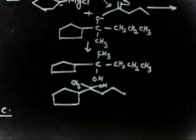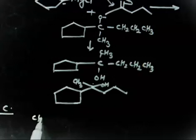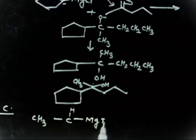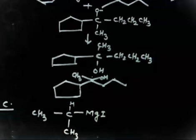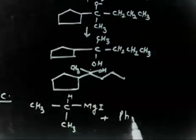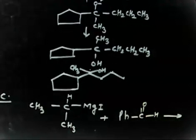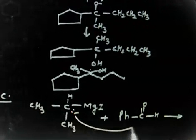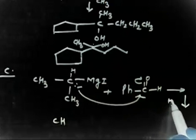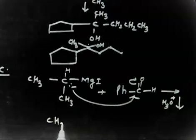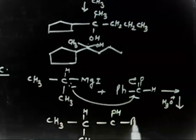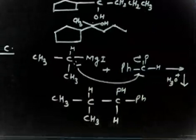Part C is again easy — these are Grignard reagent reactions. If you have CH₃CH(MgI) — a Grignard reagent with a CH₃ group — and this reacts with PhCHO (benzaldehyde, Ph-CH=O), the carbanion has a negative charge and will attack the carbonyl carbon. This opens up, and after hydrolysis with H₃O⁺, you get the final product.